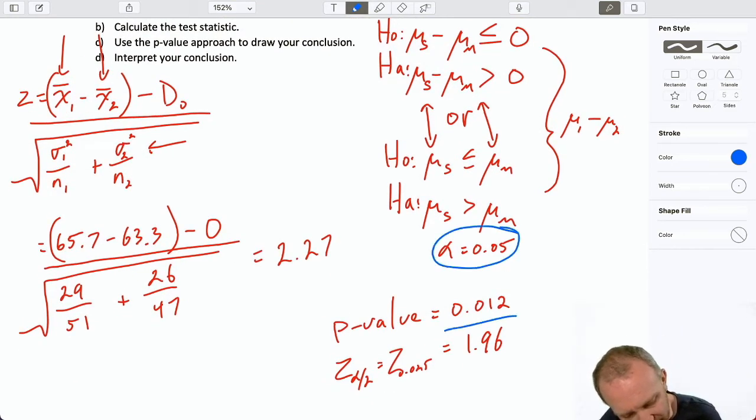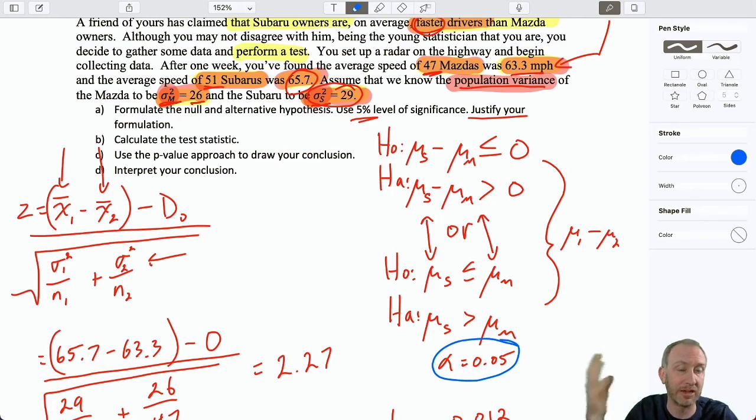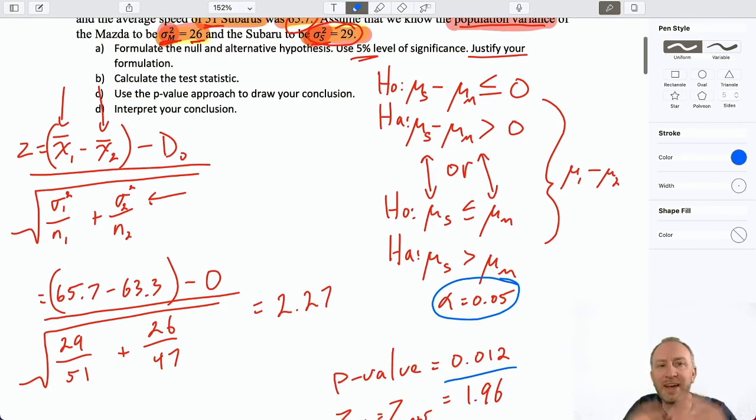We have our p-value. We have our critical value. Our level of significance here is 0.05. Our p-value is 0.012. This all means the same thing as it always has. The level of significance is our comfort level towards committing a type 1 error. Remember, a type 1 error rejecting a true null. So, I'm comfortable with a 5% chance believing that my friend's statement is correct. That the average speed of a Subaru is greater than that of a Mazda. When, in fact, he's wrong. So, that's my exposure. That's my comfort level towards a type 1 error. Believing the alternative when the null is true. The p-value gives me a measure of my actual exposure to a type 1 error.